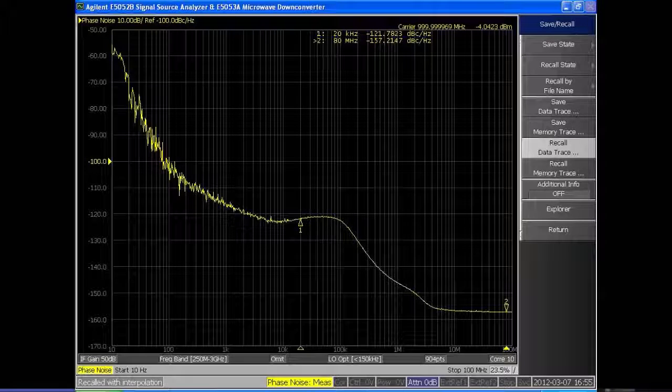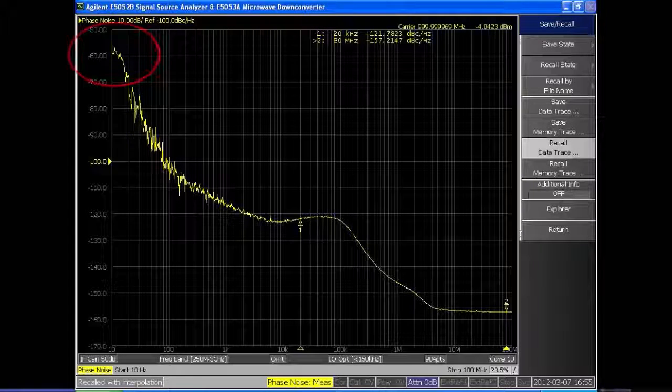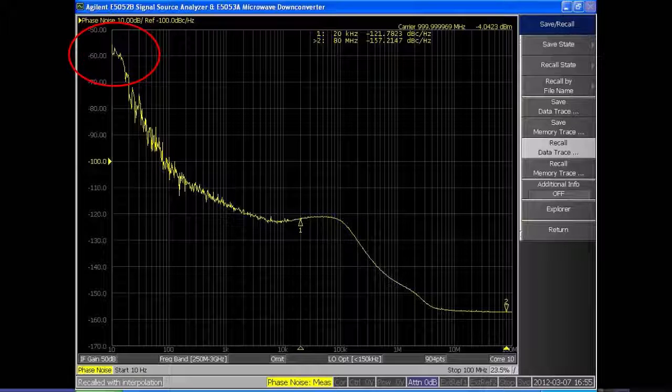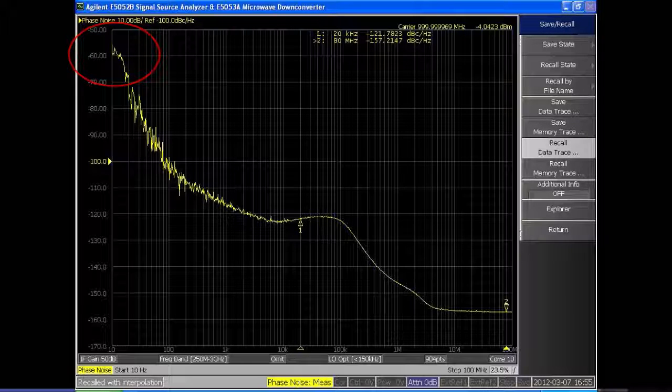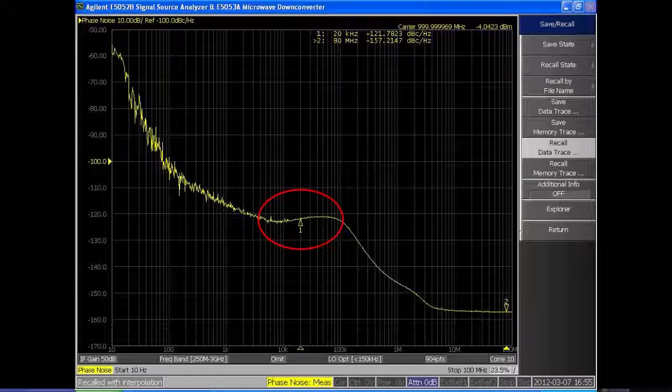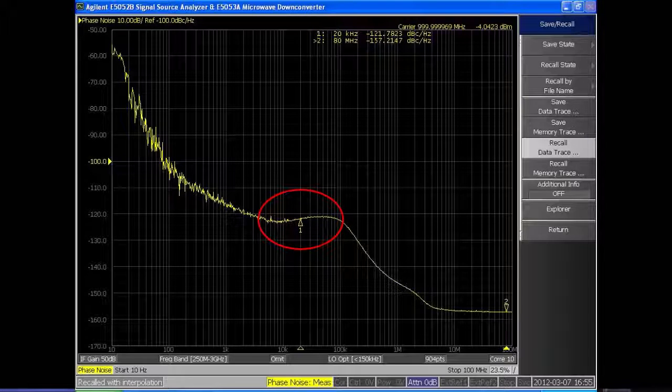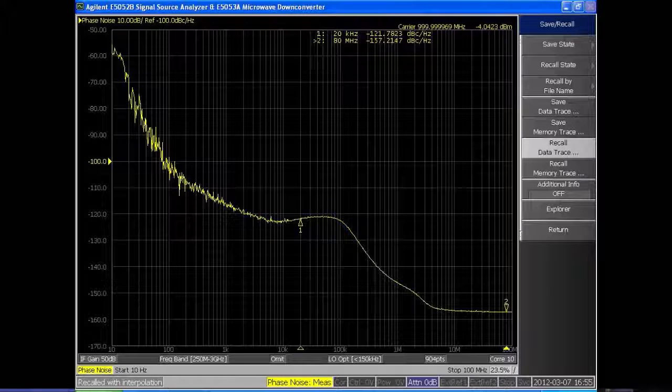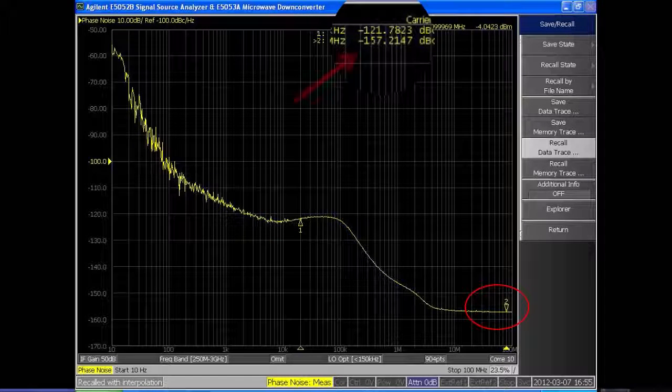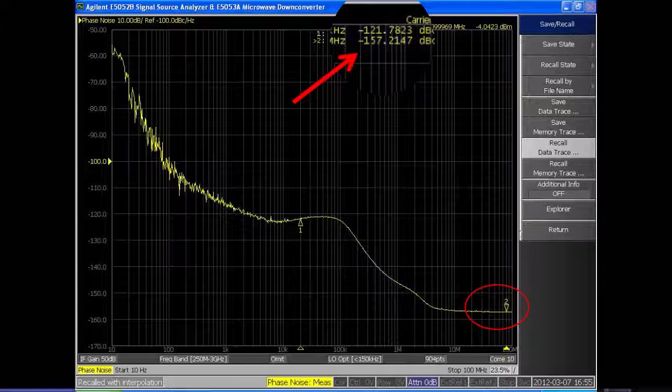So right now you can see because of the VCO we're getting about minus 60 dBc per hertz at the 10 hertz offset. Now as we move into the pedestal we get an improvement at minus 121 dBc per hertz and you can see the broadband noise out here is at minus 157 approximately at the 10 megahertz.